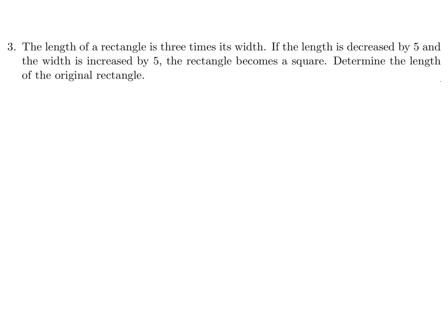The length of a rectangle is three times its width. If the length is decreased by five and the width is increased by five, the rectangle becomes a square. Determine the length of the original rectangle. So originally we have a rectangle where the length is three times the width. And then they're saying if you decrease the length by five and then increase the width by five, you get a square. So that basically means that the sides would be equal.